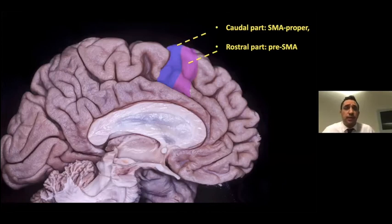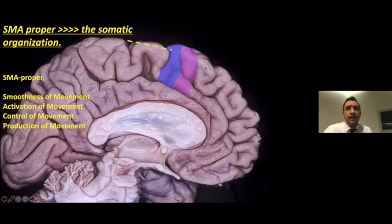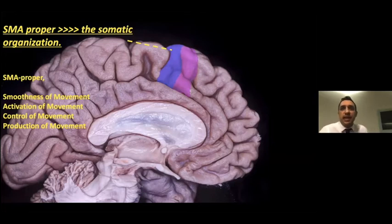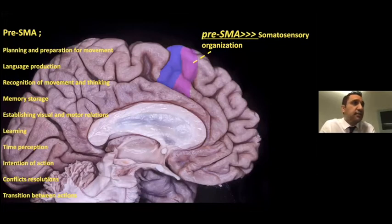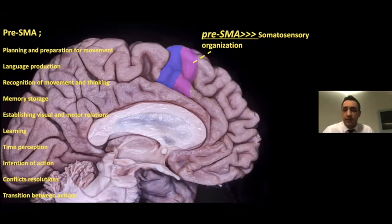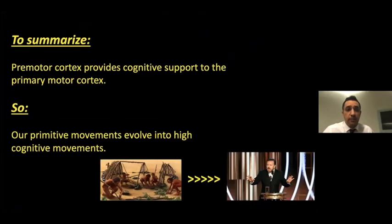Functionally, the SMA complex is divided into two parts: the caudal part called SMA proper and the rostral part called pre-SMA. The SMA proper, due to its short association connection with the primary motor cortex and direct corticospinal connection, is more related to somatic organization — smoothness, activation, control, and production of movement. The pre-SMA is more related to higher cognitive functions due to its prefrontal connections, including memory storage, learning, time perception, and transition between actions. In summary, the premotor cortex provides cognitive support to the primary motor cortex, evolving our primitive movements into high cognitive movements.